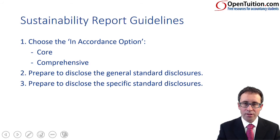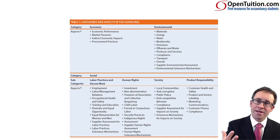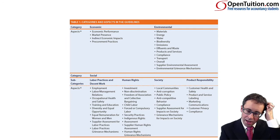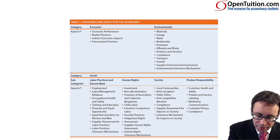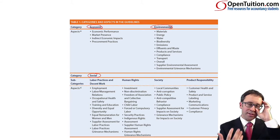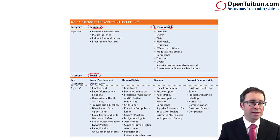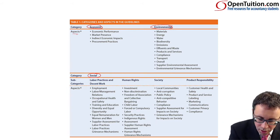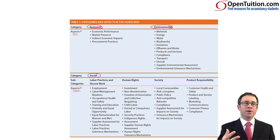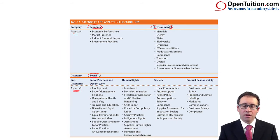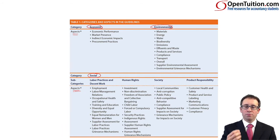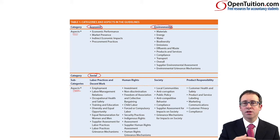The framework starts talking about the different categories: economic, environmental and social. The social category is split out further into labour, human rights, society and product responsibility. The aspects are the subsections of each individual category, providing a focus on what you should be reporting on. Whether it's the core or comprehensive option, you need to report on the material aspects — so as a business, you need to go through and identify the economic, environmental and social impacts your business has.